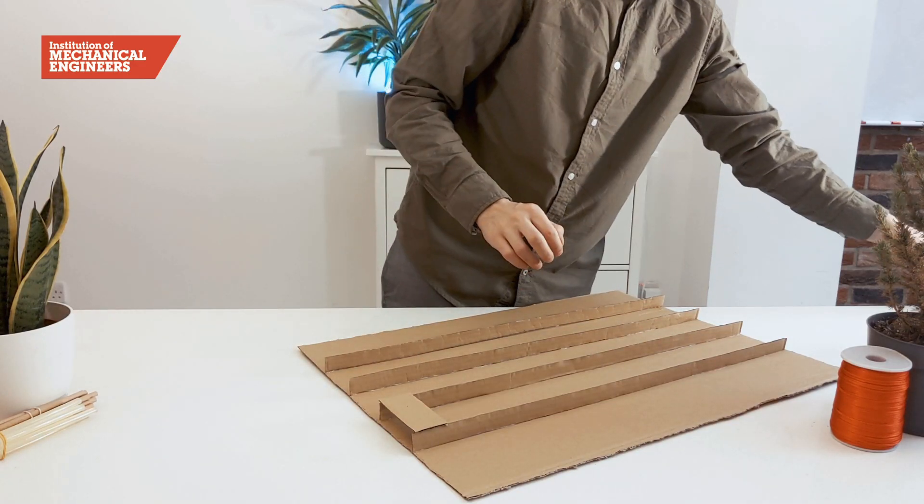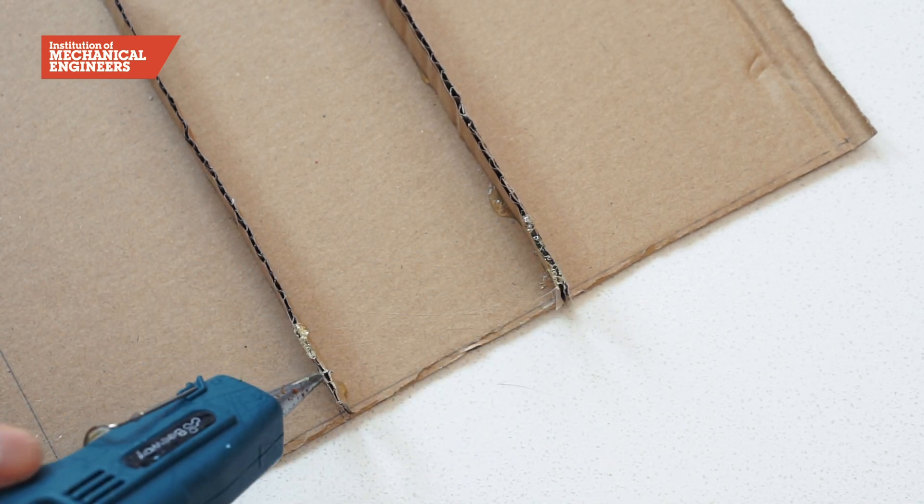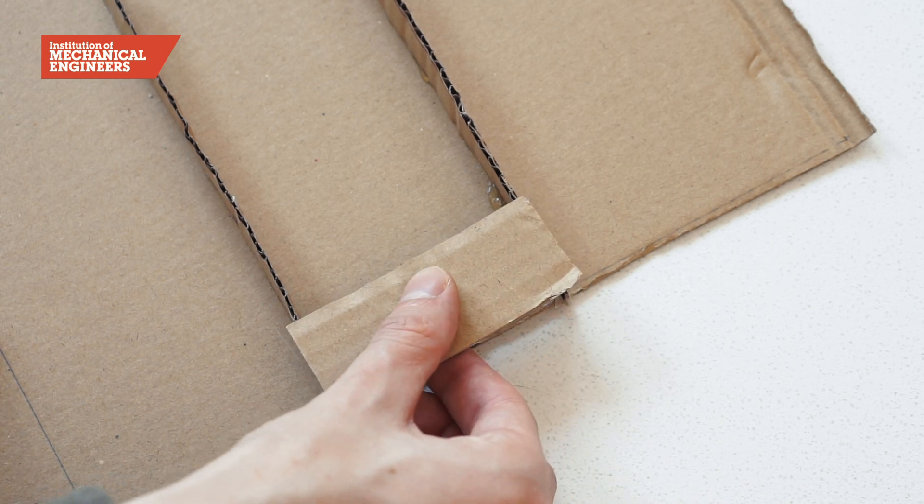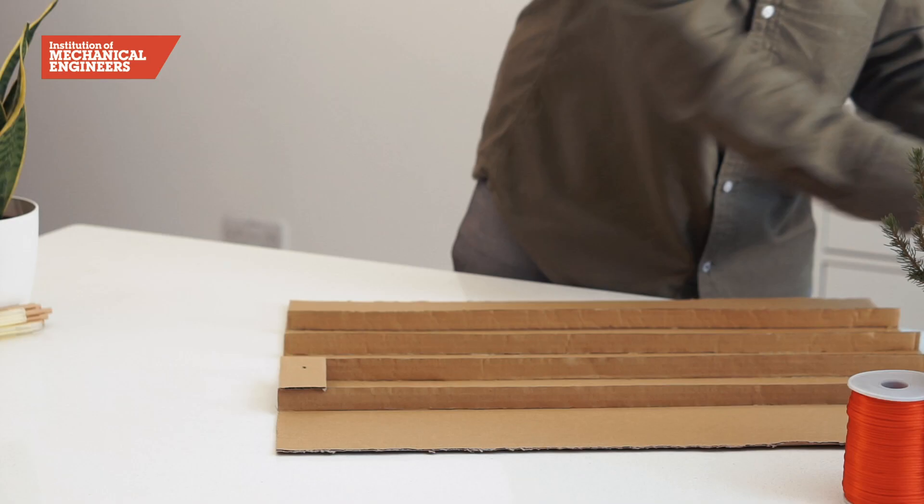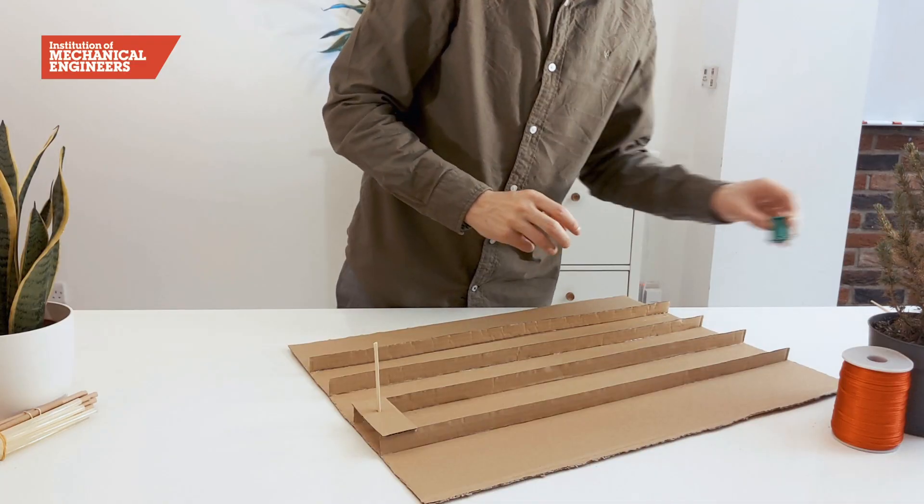Next we will begin to build the pulley system by gluing a rectangle of card across the end of one of the tracks. Pierce a hole in the rectangle and push two pieces of kebab stick through the hole to form a shaft for the cotton reel to spin on.